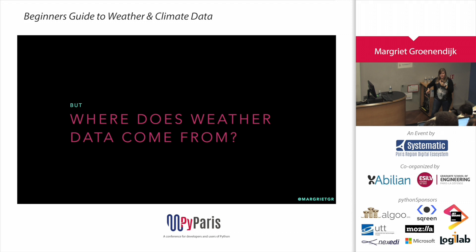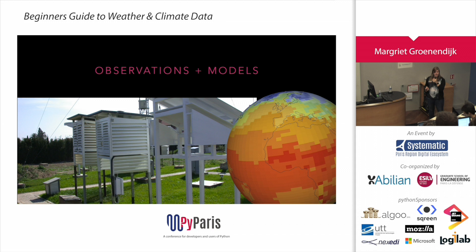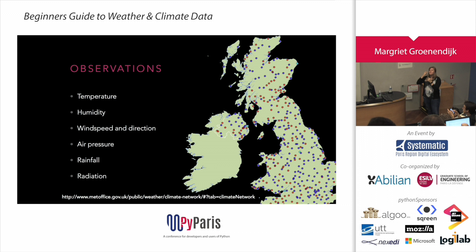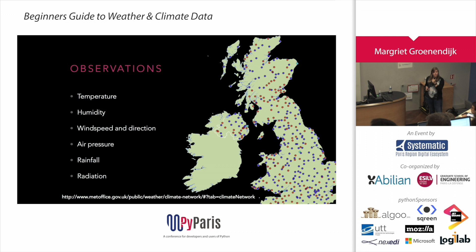Back to weather — because I kind of drifted away from that. Where does this weather data all come from? Now I go a bit back to my previous life in academia. Obviously it comes from observations and models. If you want to go into the past, it's quite easy — most of it is observed. In the future, you need a model or some statistics. This is UK-based but Météo-France has quite a lot of data as well, and there are many other places you can find weather data for free. Observational data includes temperature, humidity, wind speed, air pressure, rainfall, and radiation — all observed all over the world at many locations.